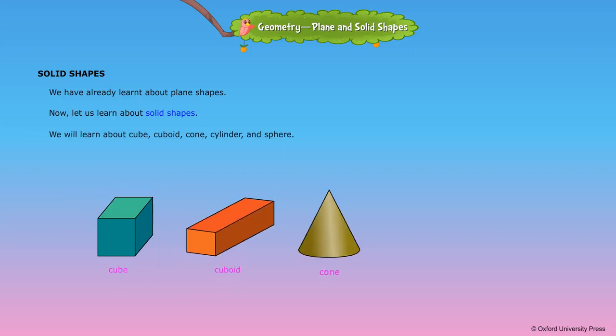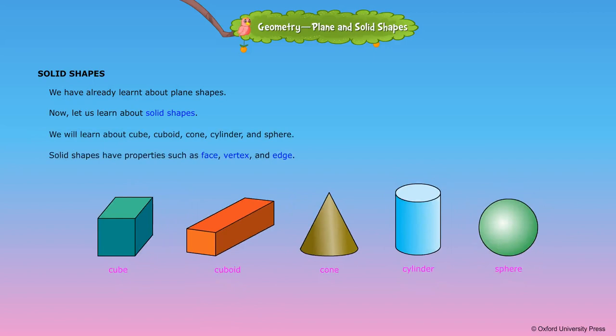Solid shapes: We have already learnt about plane shapes. Now let us learn about solid shapes. We will learn about cube, cuboid, cone, cylinder, and sphere. Solid shapes have properties such as face, vertex, and edge.